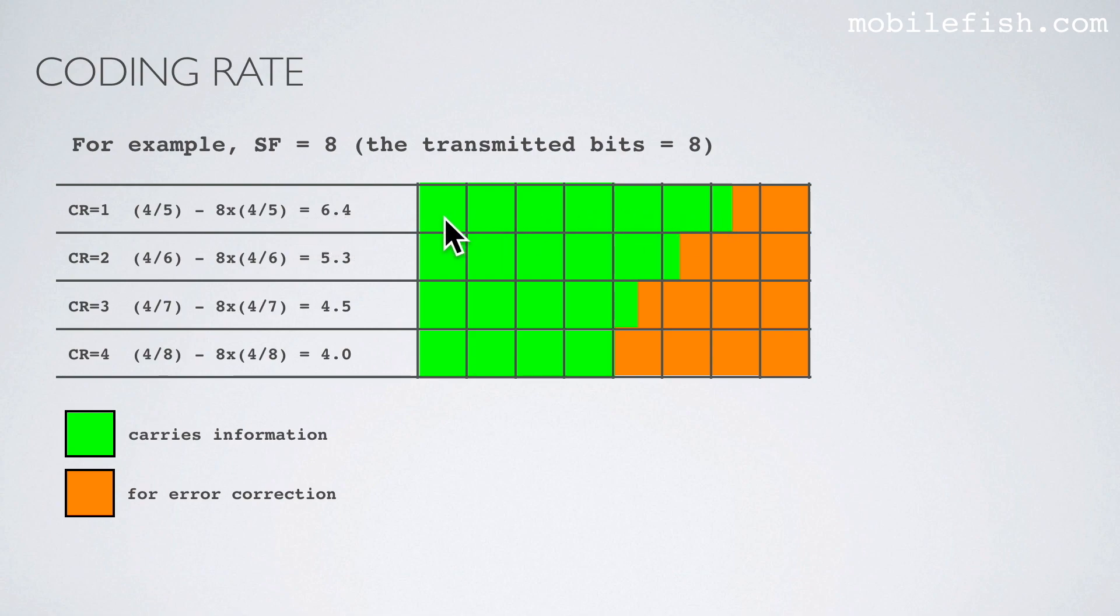So 6.4 bits carry actual information and the rest is for error correction. If the coding rate is 4, then 4 bits carry actual information as you can see by this calculation: 8 times 4/8 equals 4. So 4 bits carry actual information and the rest is for error correction.